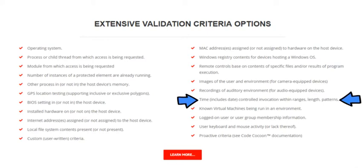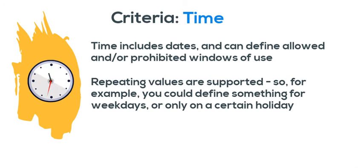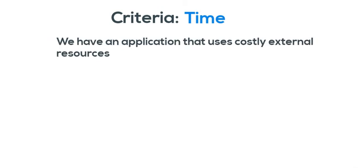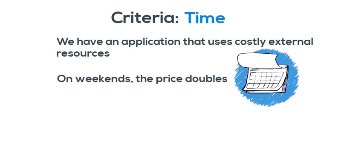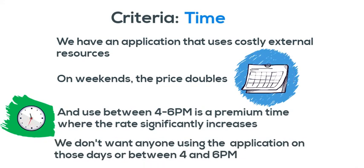Let's take a look at the time criteria group. Time also includes dates and can define allowed or prohibited windows of use. These windows can be repeated, so like times of the day, days of the week, certain holidays, etc. Let's say we have an application that uses costly external resources. On weekends the price doubles, and between 4 and 6 p.m. is another premium time. So we don't want anybody using the application between 4 and 6 p.m. on any day, and not at all on weekends. With Amulet technology, that's no problem.